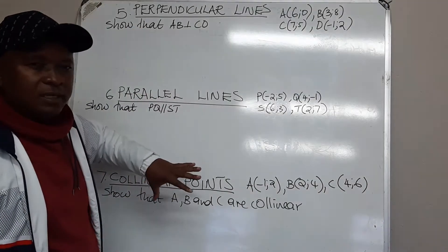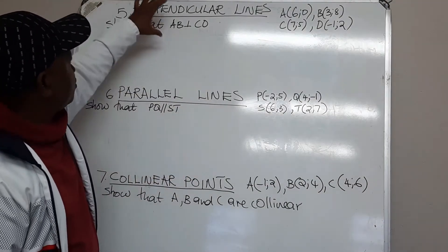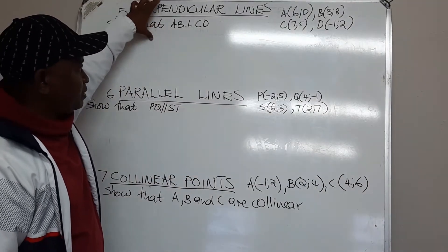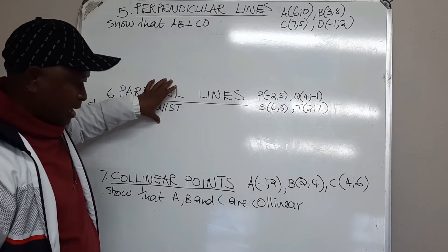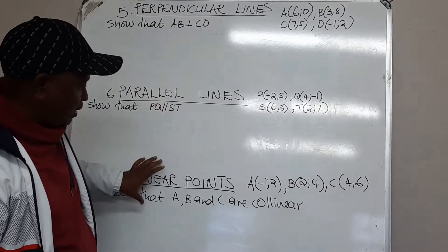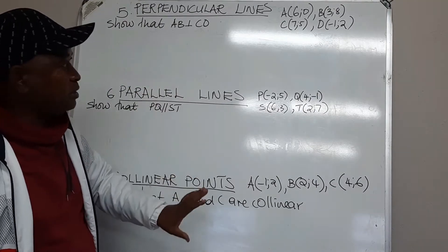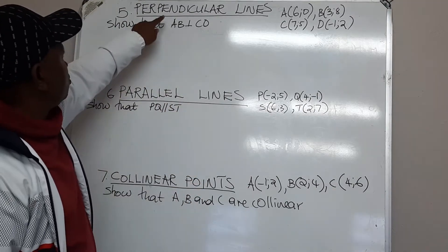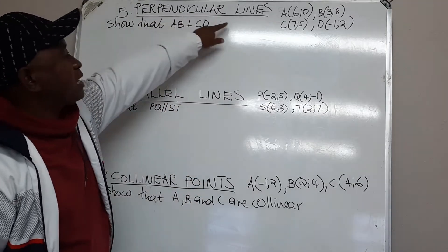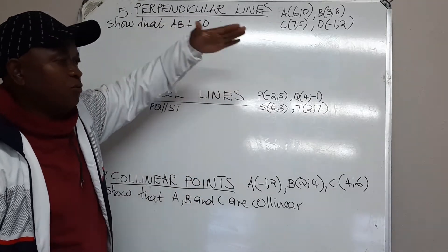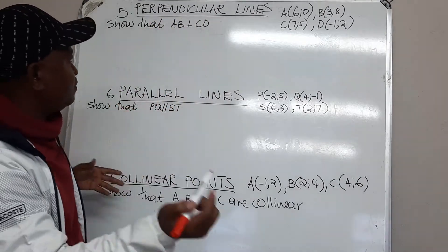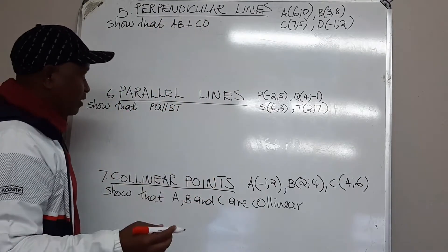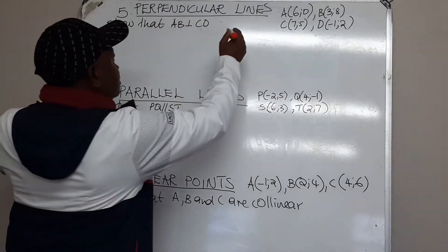Our second lesson is going to focus on perpendicular lines, parallel lines and collinear points. When we say lines are perpendicular, we mean where they meet, they form an angle of 90 degrees.